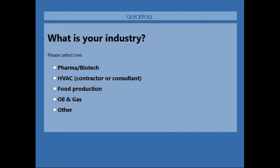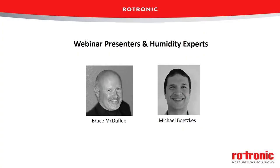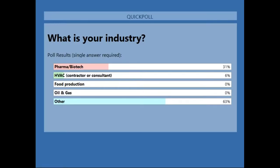We've got 'distributor' from Jason, and 'auto' from Daniel — I assume that's automobile. Thanks everyone for sharing that information. I'll close the poll so you can see the results. Nobody from food or oil and gas, or nobody wants to admit it.